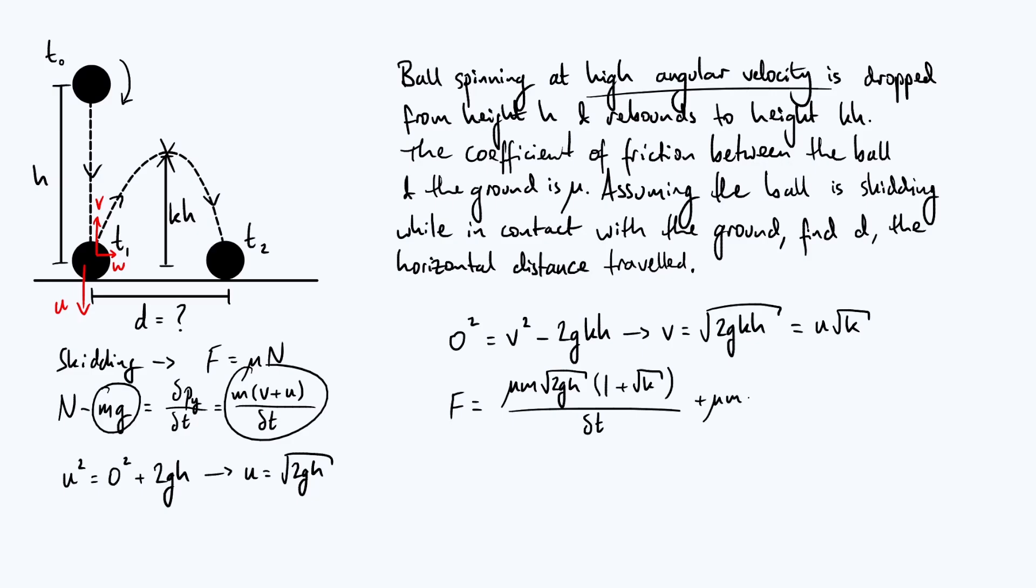What we want to do is relate that frictional force to the horizontal component of the velocity after the bounce, which is w. And we can do that by applying Newton's second law again, but this time in the horizontal direction. So we're going to set that whole thing to the rate of change of horizontal momentum, which is delta px by delta t. But the change in horizontal momentum is just m times w minus 0, because there was no horizontal momentum to start with, and that of course has to be divided by delta t.